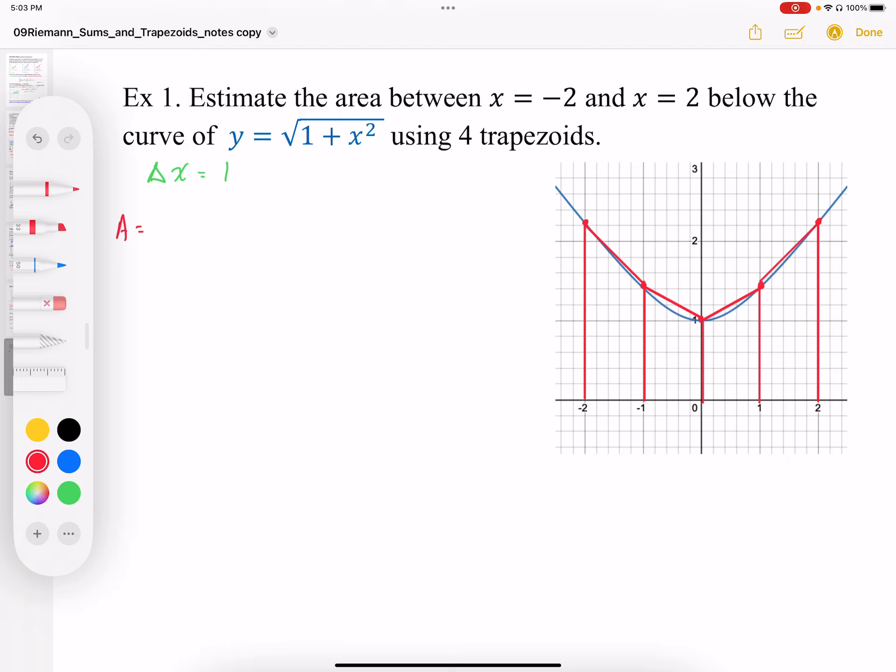We're being asked to estimate the area between x = -2 and x = 2 below the curve of y = √(1 + x²), and we're going to use 4 trapezoids to do this.